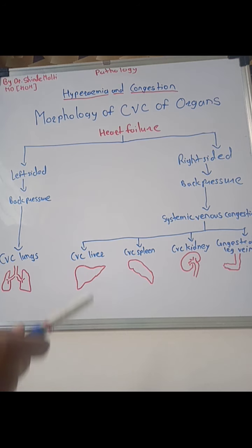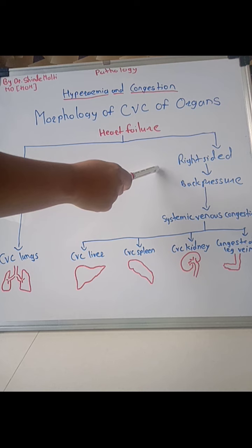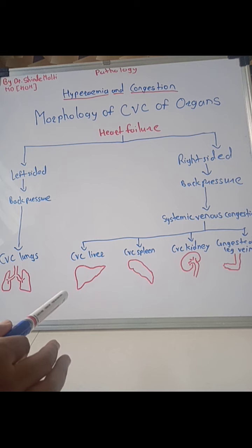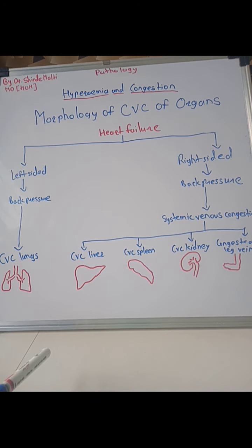All these morphological changes in the different organs — CVC of lungs, liver, spleen, and kidney — are due to heart failure. CVC of lung occurs due to left-sided heart failure, while CVC of liver, spleen, and kidney occur due to right-sided heart failure, all representing chronic venous congestion, also called passive hyperemia, due to impaired venous drainage.